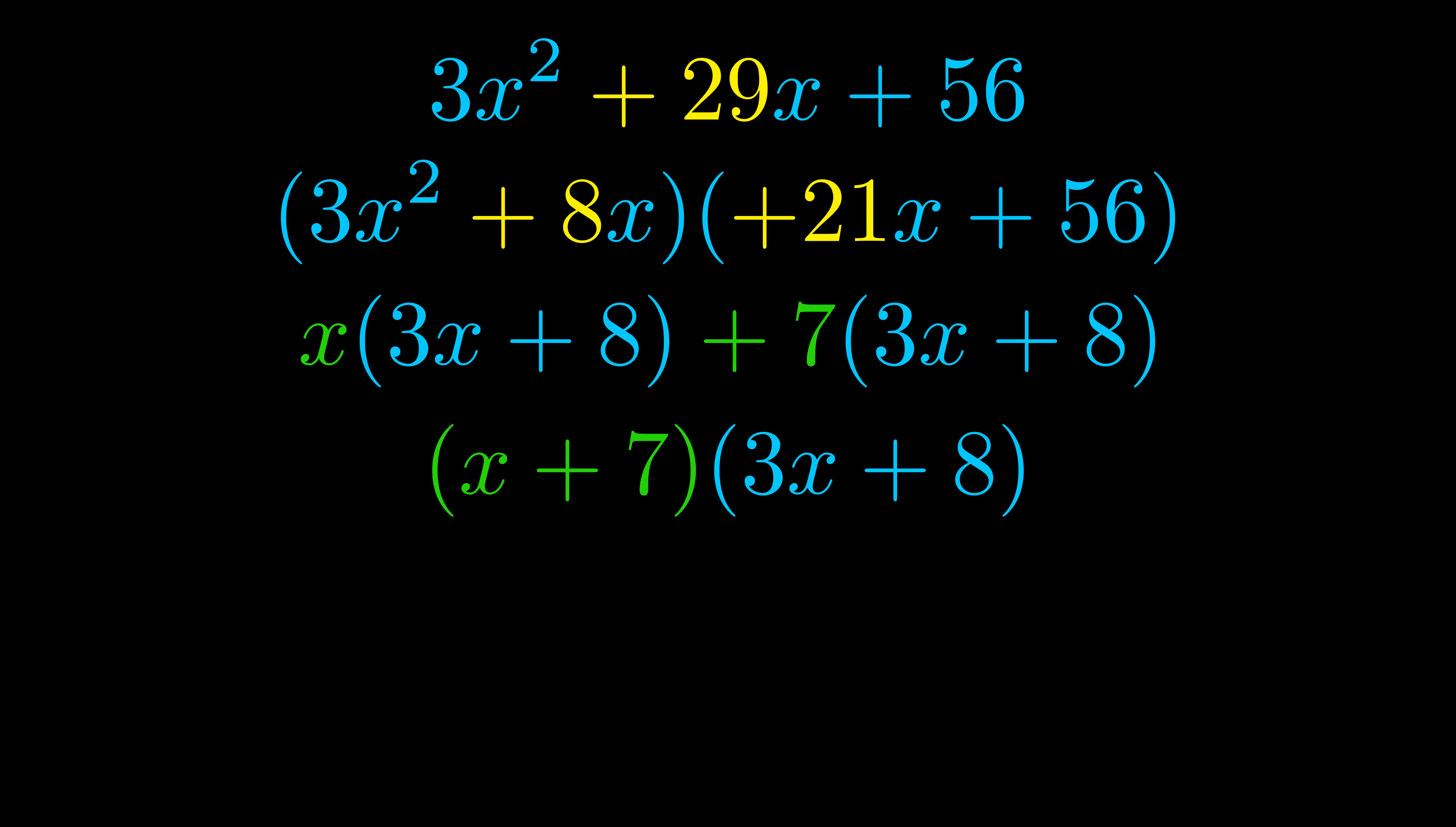The blue values are the same. Those blue values will become one of our factors and we will combine the two green values, the GCFs that we pulled out, to get the other one. And that is our fully factored equation.